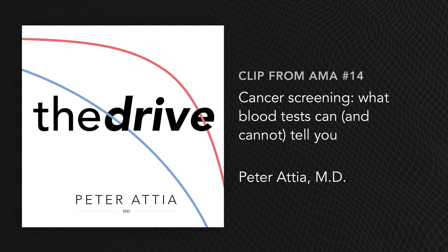Moving on to the next disease, which is cancer. We start with the question of what drives cancer. Cancer is both a genetic and metabolic disease. By definition, cancer cells have mutated and share a common trait: unregulated or dysregulated cell growth — cells that grow without responding to normal cell cycle signaling. There's also a strong immune component, because our immune system is almost always keeping cancer in check, and when it starts to lose that battle, that's when cancer starts to win.